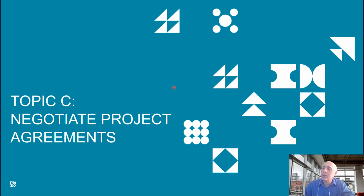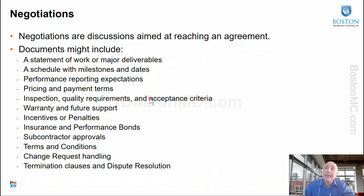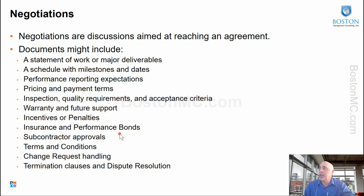This topic involves negotiating project agreements — agreeing on what we are supposed to be delivering on the project. We have to agree on certain things, and a lot of these expectations are documented in things like a project charter or a statement of work or a schedule with milestones. These are expectations from your management or expectations that you've put together, and we're supposed to deliver against them.